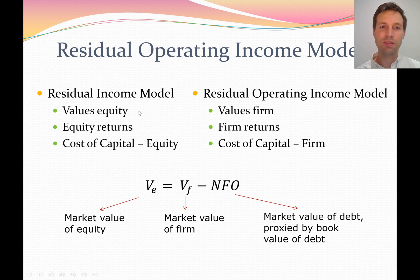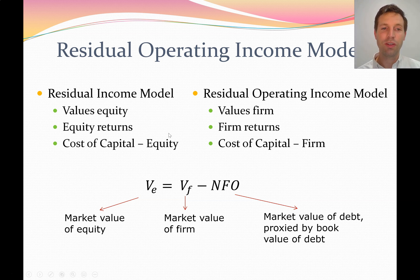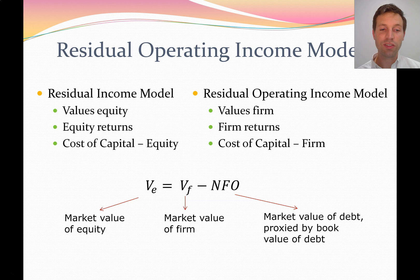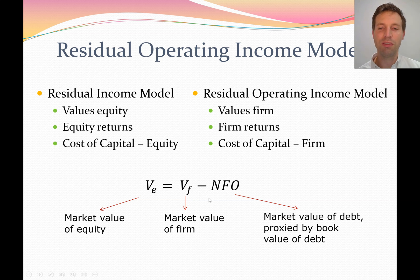To reiterate: the residual income model values the firm's equity, while the residual operating income model values the firm's assets — overall firm returns versus equity returns. Remember, assets equals liabilities plus owner's equity. So one model values the equity and the other values the assets. They use the cost of capital for the firm — covering both assets and debt — versus the cost of capital for just the equity. The models can be reconciled: if you subtract the debt from the asset value, you still get the value of equity.